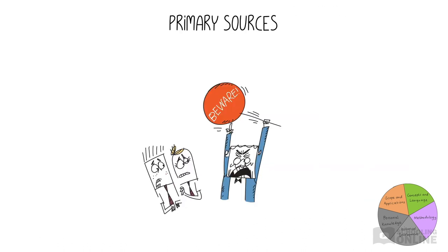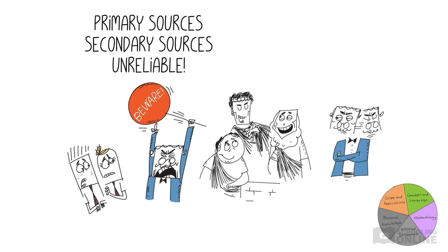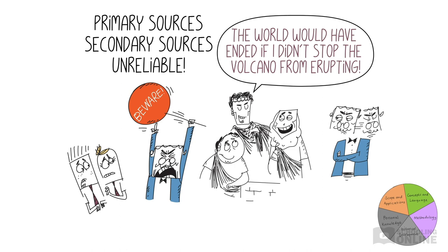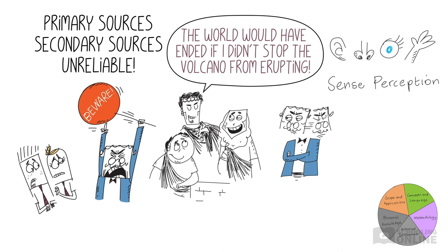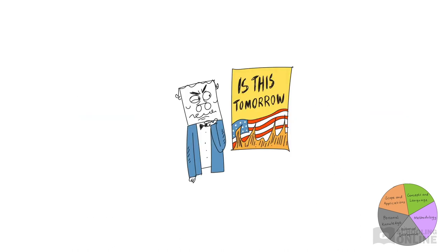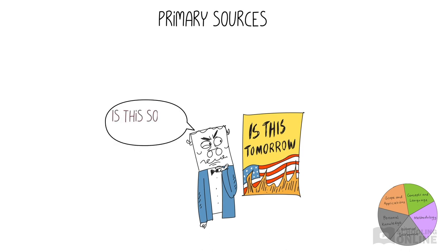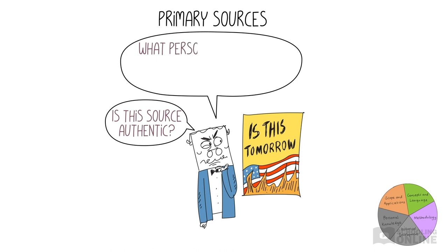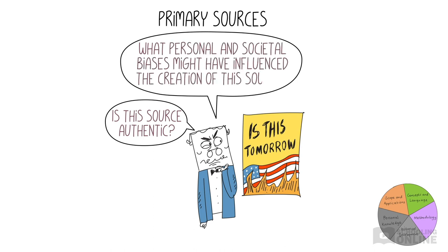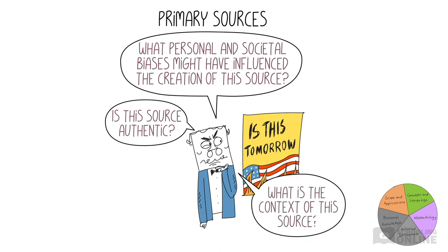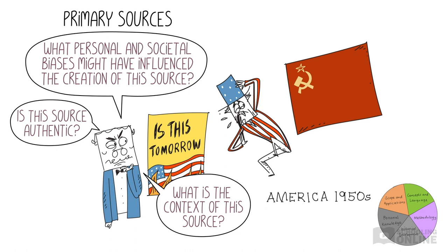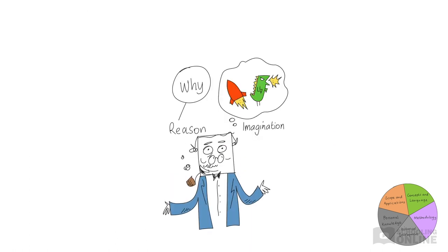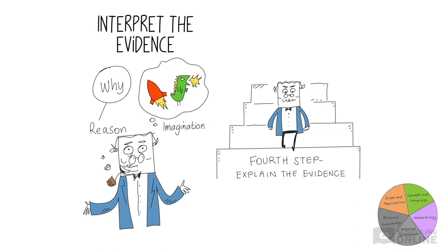Beware — some primary and secondary sources might be unreliable. Even first-hand accounts of an event can be distorted, as personal interests and expectations can influence individual sense perception and memory. To identify reliable sources, historians need to ask some questions. For primary sources: Is this source authentic and how can I determine that? What personal and societal biases might have influenced the creation of this source? And what is the historical context — what was happening at the time this source was created? Along the way, historians use their reason and imagination to interpret the evidence and eventually develop a plausible theory that agrees with other accepted theories.